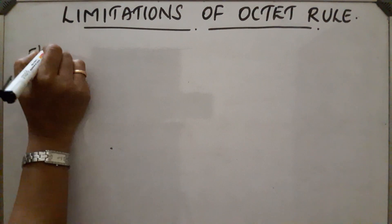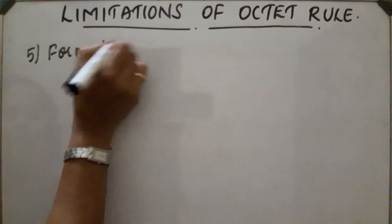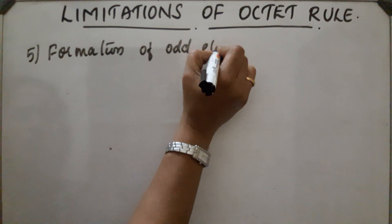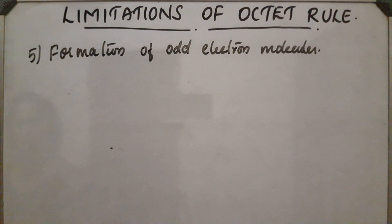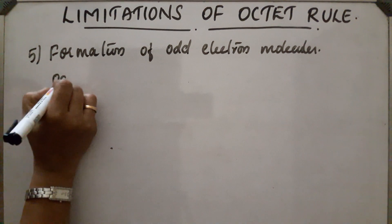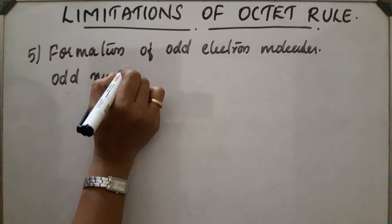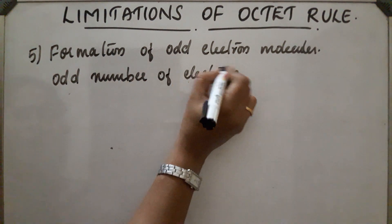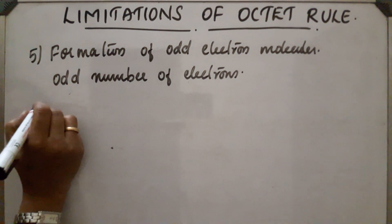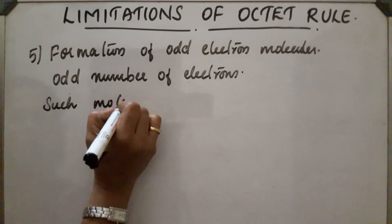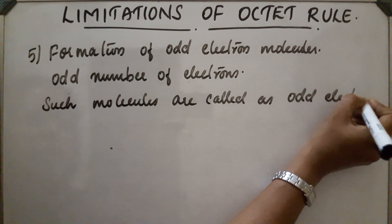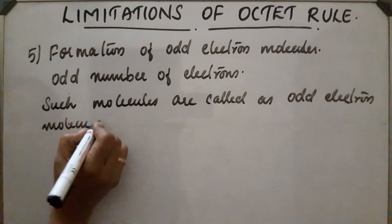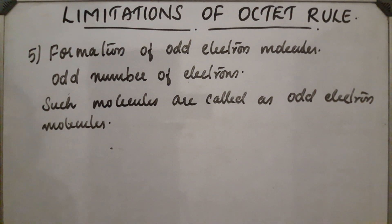Another exception is the formation of odd electron molecules. In the case of some molecules, the atoms are bonded while containing an odd number of electrons, so after bonding they still contain an odd number of electrons. These molecules are called odd electron molecules. Examples include NO and NO2, in which the octet rule is not satisfied.